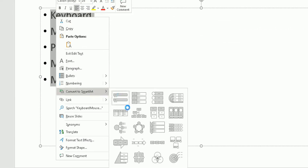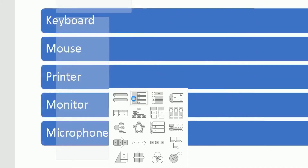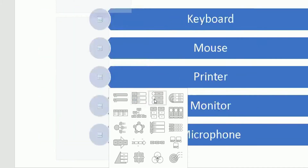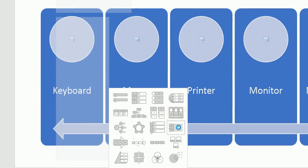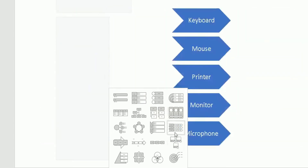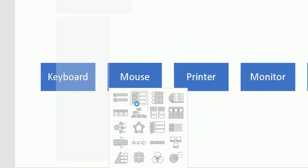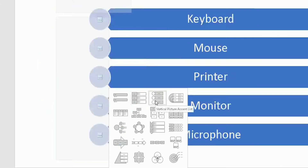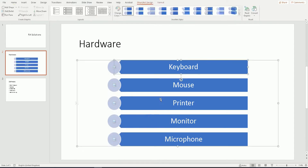You can see some options, and if I hover over them you can already see the information being converted into particular types of SmartArt. I'm going to choose one for the purpose of this video and then show you what I can do as a next step. I'm going to choose this Vertical Picture Accent List here. So that's my SmartArt now.